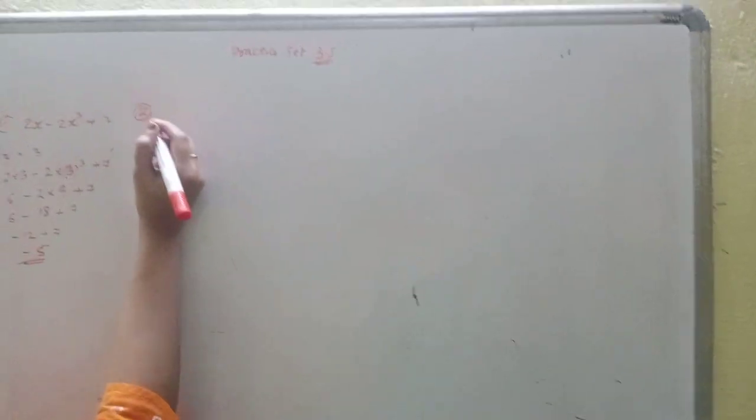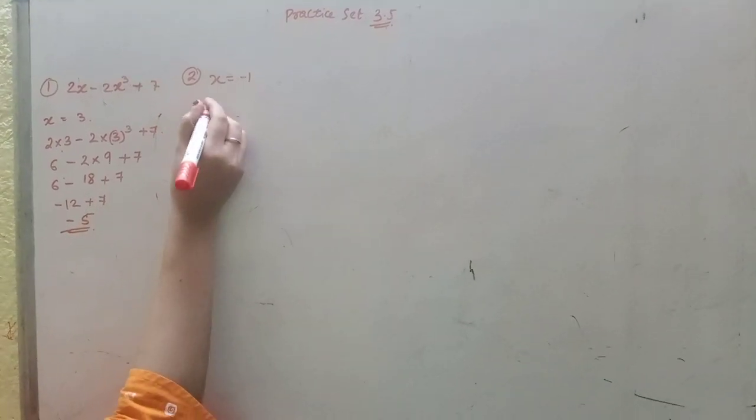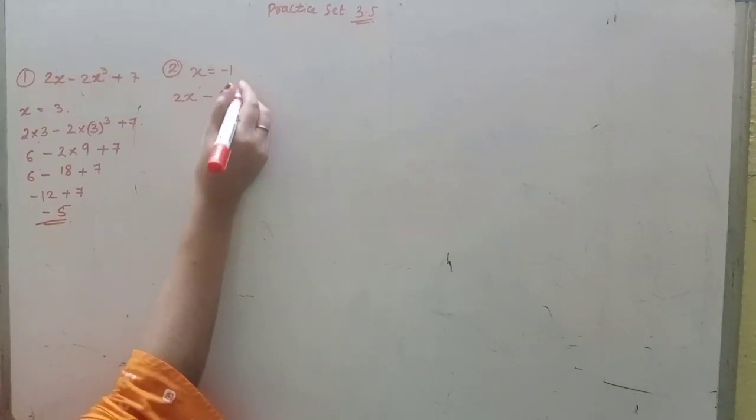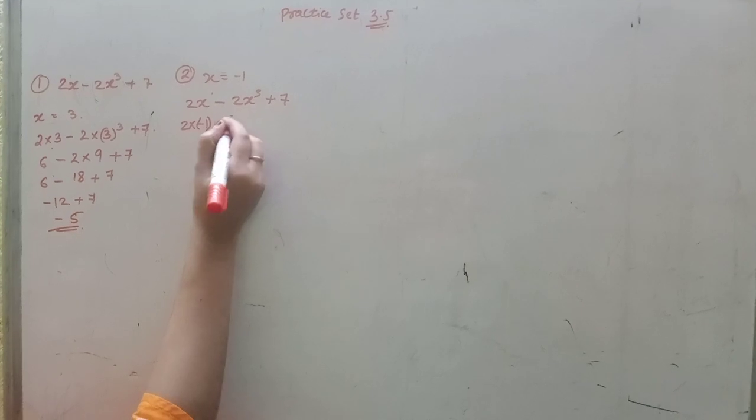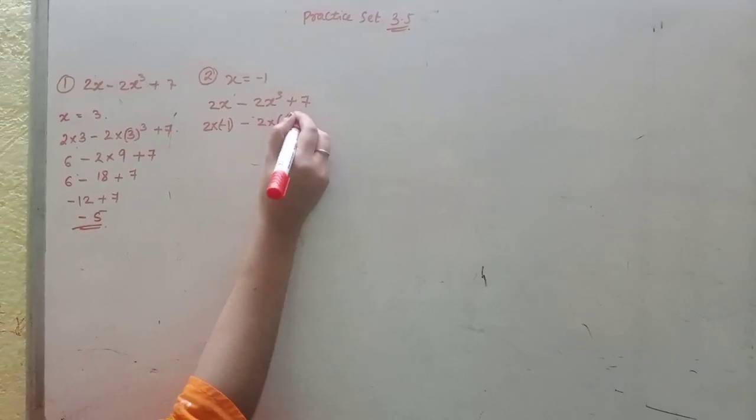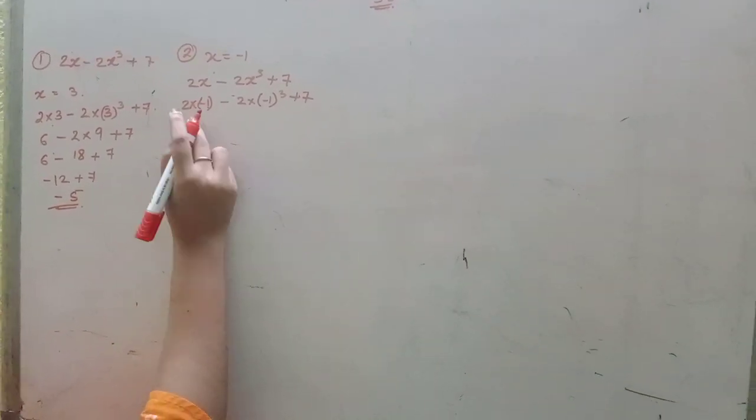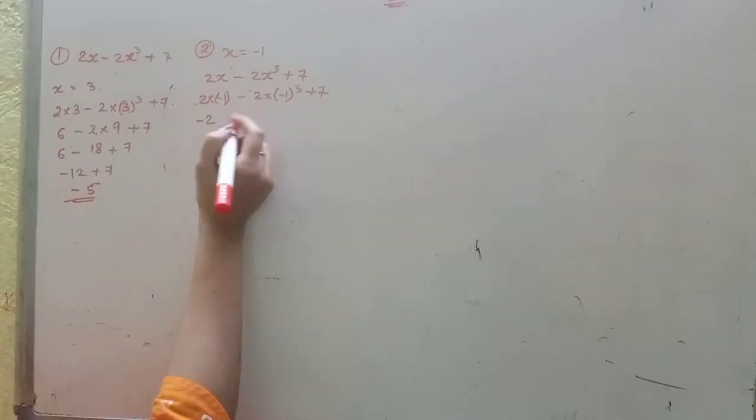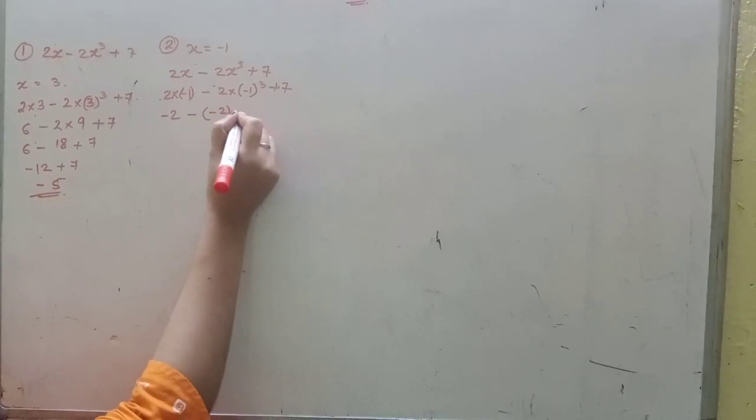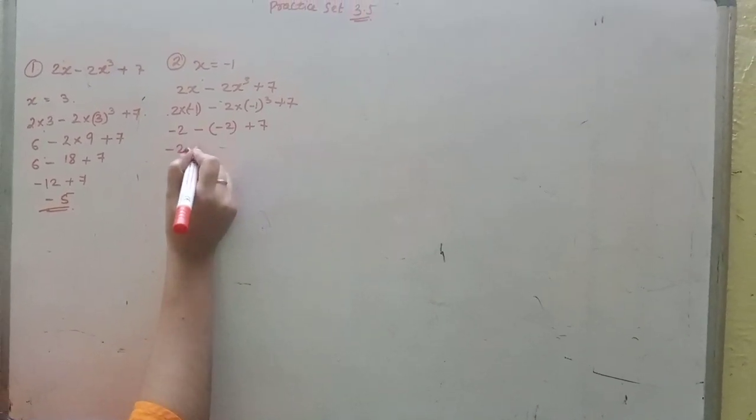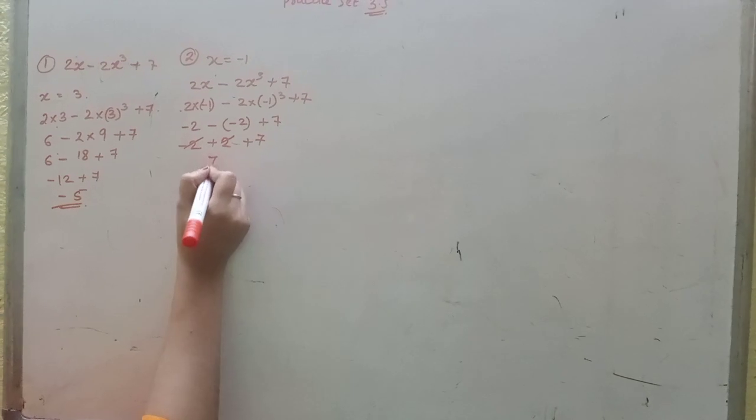Similarly, the second one is given x equals -1. So 2 into -1 minus 2 into (-1)³ plus 7 equals -2 minus 2 into -1 plus 7.